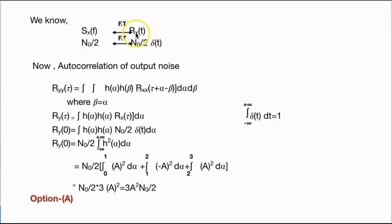We already know these facts, and by the formula for autocorrelation of output noise, substituting values, we get this value. Okay, the option for this will be answer B.